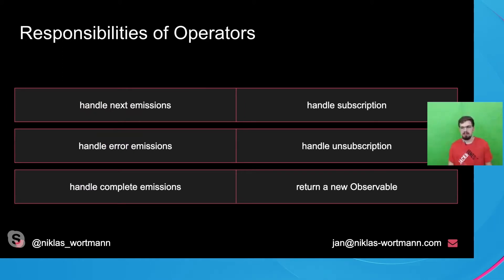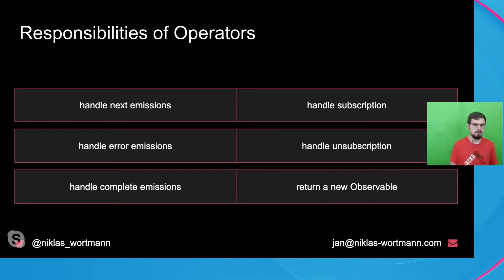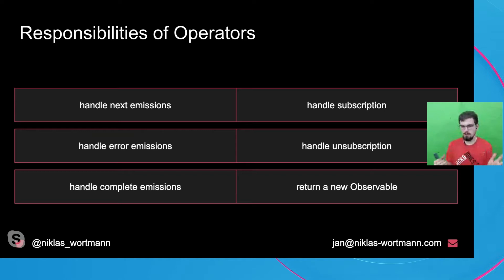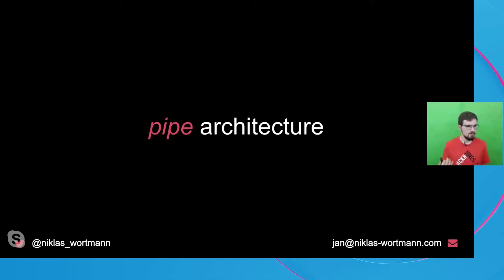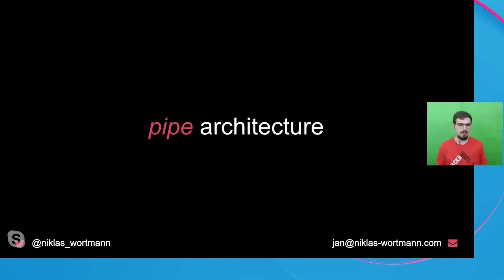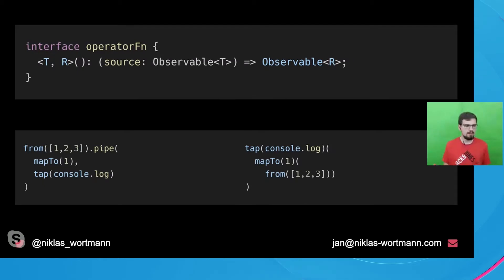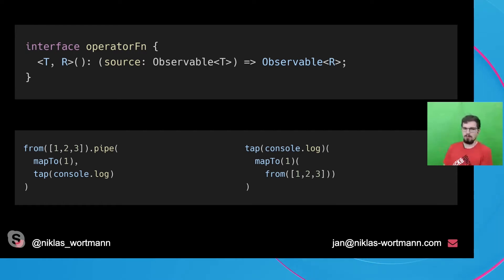Before we dive deeper into what is and isn't an operator, I want to talk about the responsibilities of an operator. From my point of view, an operator needs to handle all emissions — next, error, complete — it needs to handle subscription and unsubscription, and it needs to return a new observable. To understand all this, we want to take a look at the pipe architecture, which was introduced with RxJS 5.5.